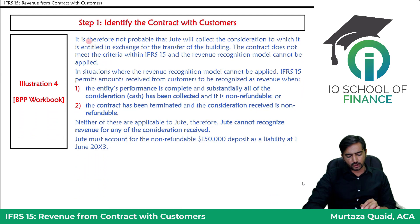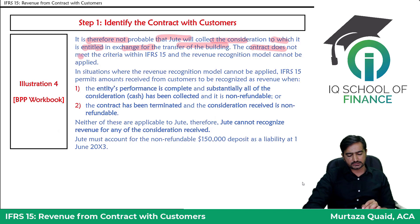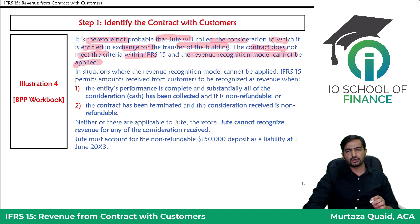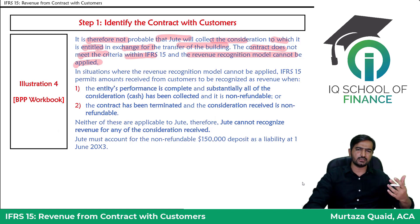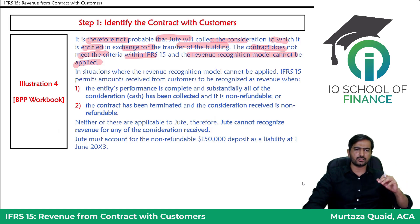It is therefore not probable that Jute will collect the consideration to which it is entitled in exchange for the transfer of the building. The contract does not meet the criteria within IFRS 15 and the revenue recognition model cannot be applied. Because the customer's ability and intention to pay is in doubt, the 5-criteria test is not fully met, and IFRS 15's principle-based 5-step model cannot be followed.